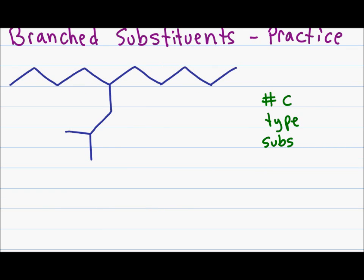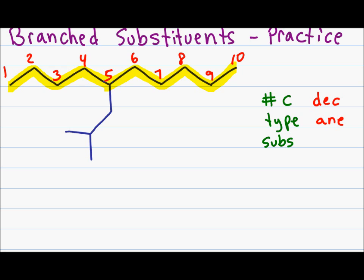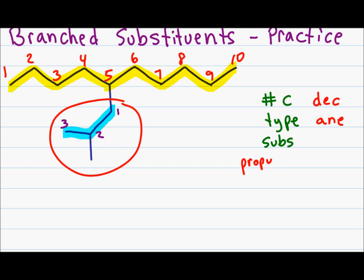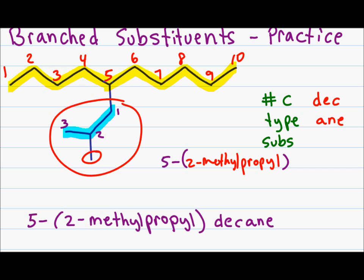In this example I highlight and number the parent chain. I have ten carbons giving me dec, and only single bonds giving me ane. For the branched substituent I highlight the longest chain starting with the carbon attached to the parent chain — a total of three carbons, which is prop, giving me propyl as my main substituent. Coming off the second carbon I have a methyl group giving me 2-methyl. The entire branched substituent comes off carbon five, giving me 5-(2-methylpropyl)decane.